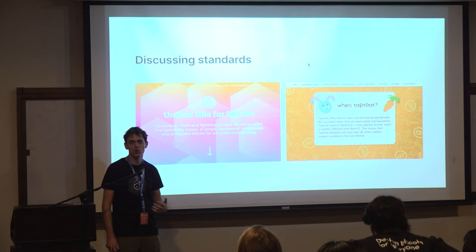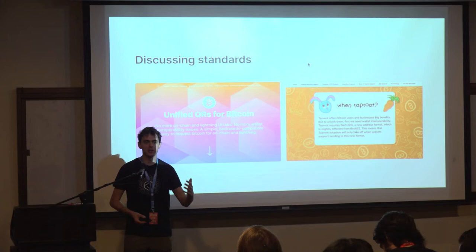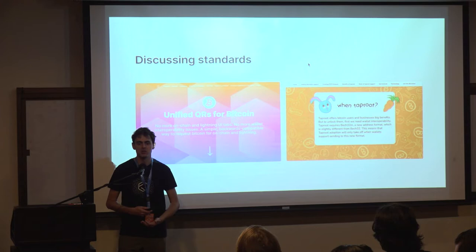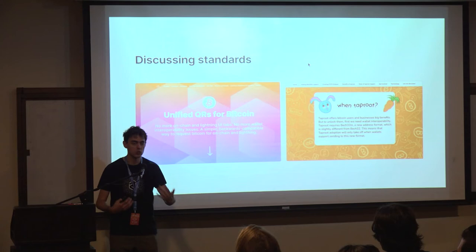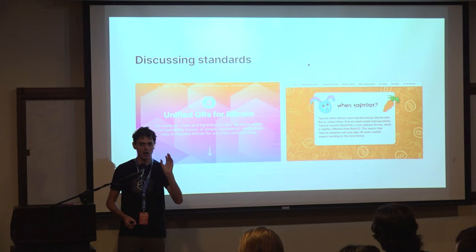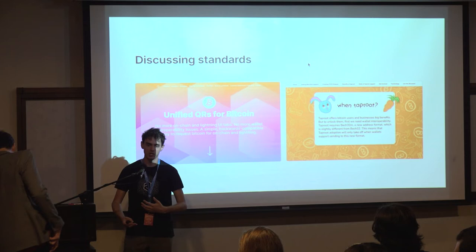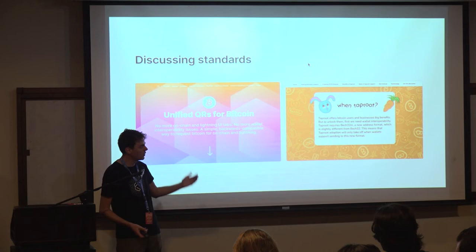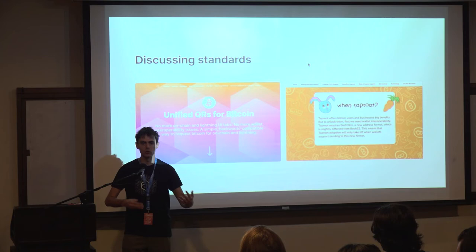Another thing we've gotten into is participating in standards discussions. A standard is a commonly accepted best practice. One we worked on is bitcoinqr.dev — what I call the unified QR code, using BIP 21. You can cram an on-chain address and a Lightning invoice into the same QR code, so the user doesn't have to choose which technology to use. We've been documenting which wallets support this and reaching out to projects. We've also done wintaproot.com to track which projects are starting to support bech32m and Pay-to-Taproot.